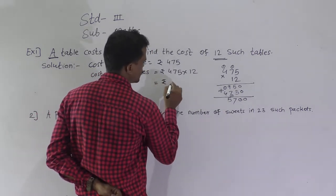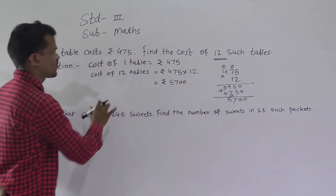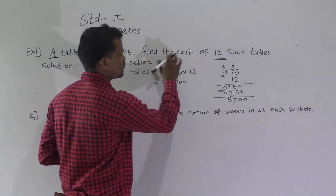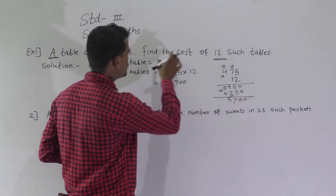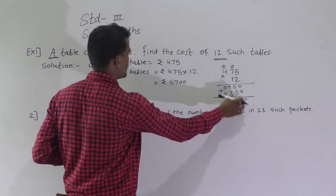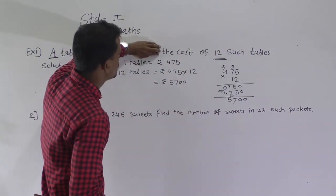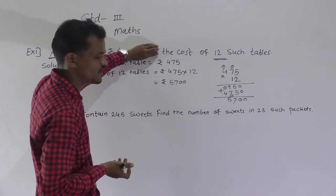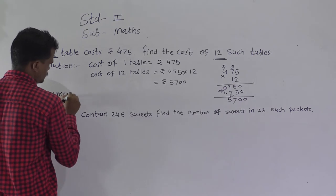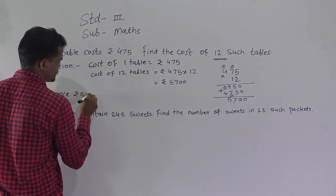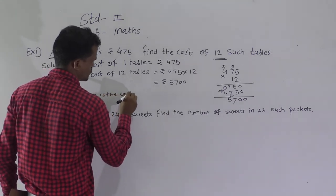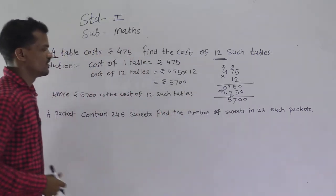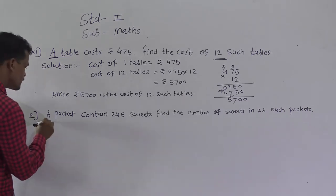This is the cost of 12 tables. Write here: rupees 5700. For the last statement, just observe the question — 'find the cost of 12 such tables' — remove the word 'find' and put the value. Hence, rupees 5700 is the cost of 12 such tables.